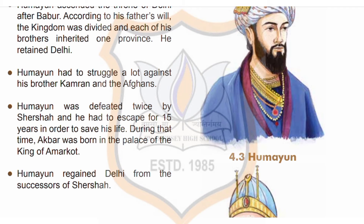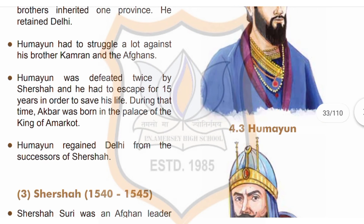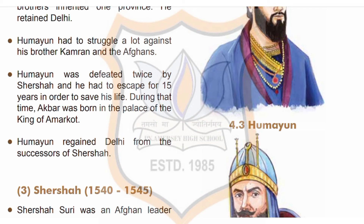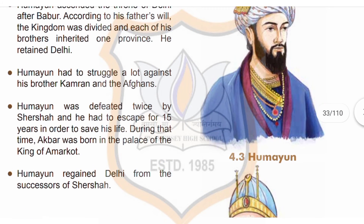Humayun had to struggle a lot against his brother Kamran and the Afghans. Humayun was defeated twice by Shersha and he had to escape for 15 years in order to save his life. During that time, Akbar was born in the palace of the king of Amarkod. Humayun regained Delhi from the successor of Shersha. Children, you can see picture 4.3 of Humayun.